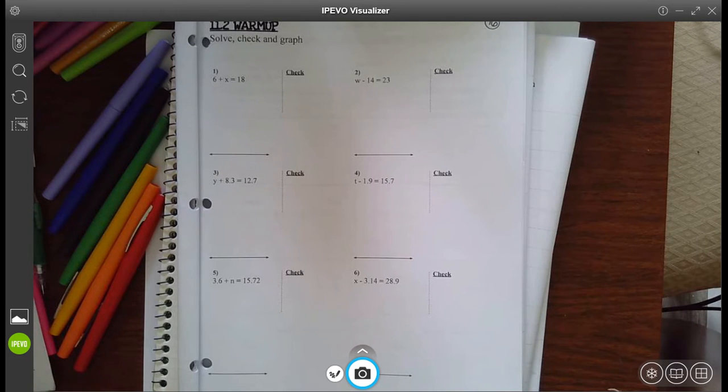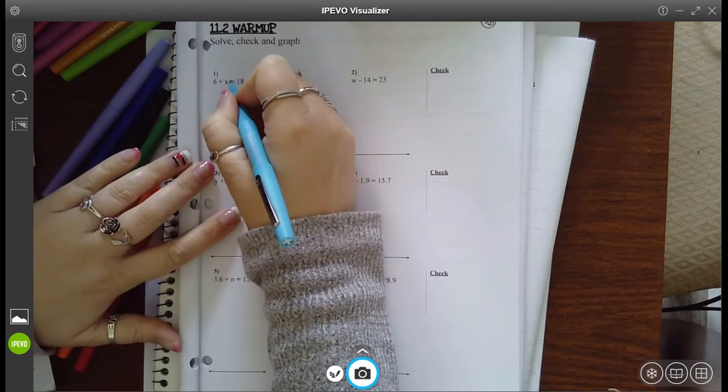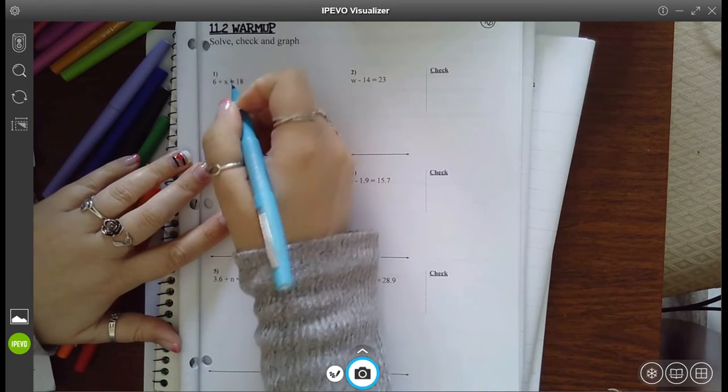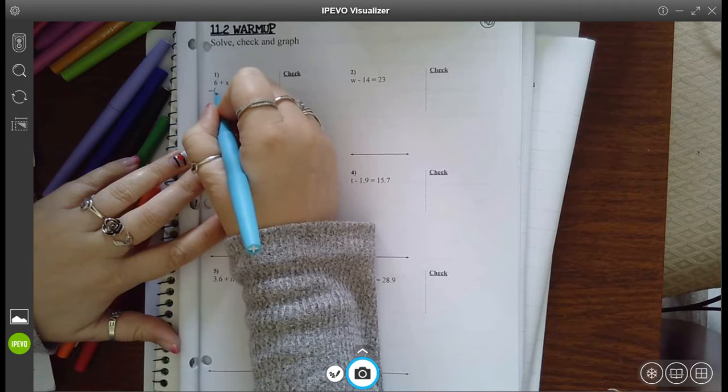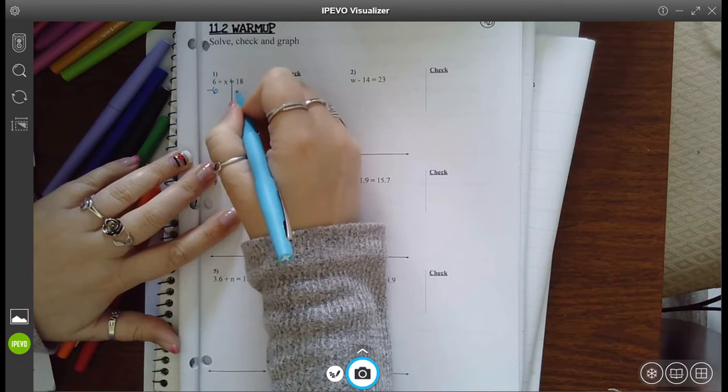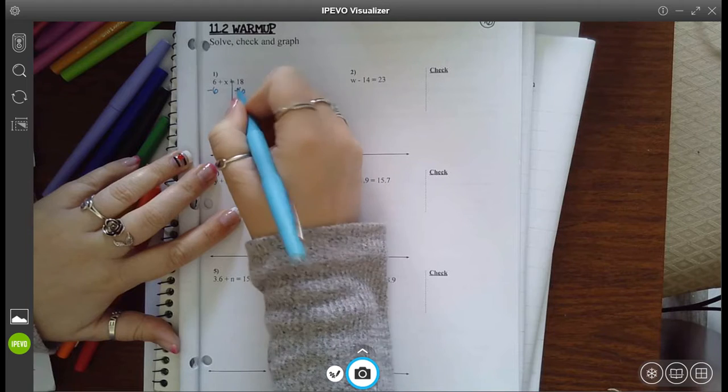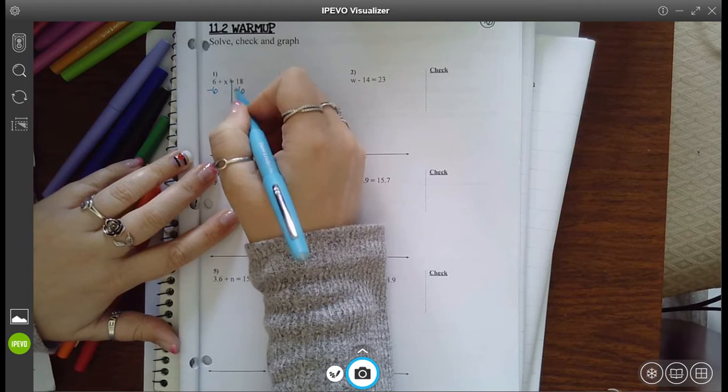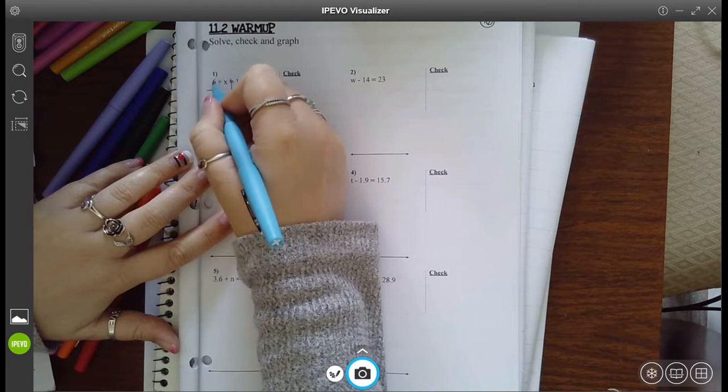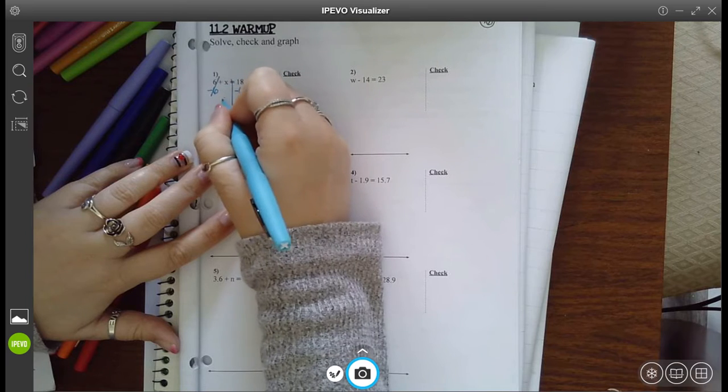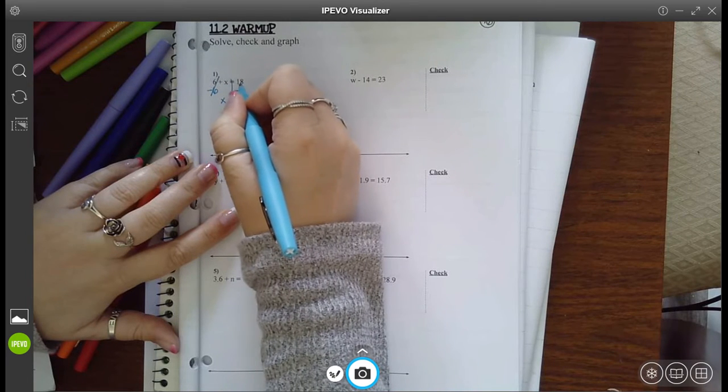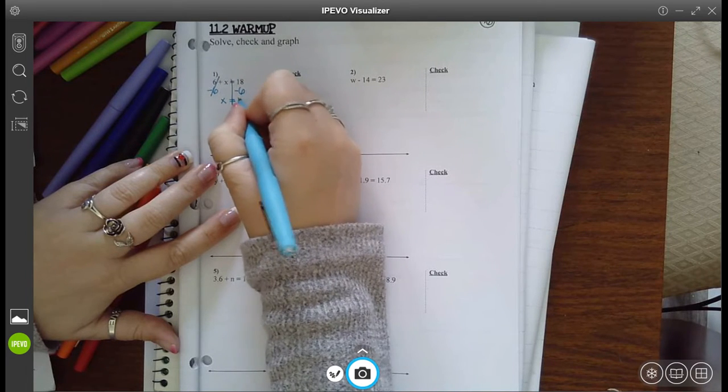Now that you're back with us, let's go ahead and start to solve these. I'm going to draw a line down for my equal sign and to get x by itself, I'm going to subtract 6 from this side, which means I need to subtract 6 from this side because whatever you do to one side, you've got to do to the other. I did that because 6 minus 6 is 0 and now x is by itself. And on this side, 18 minus 6 is 12.